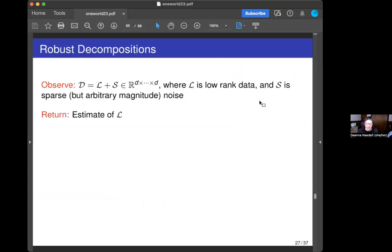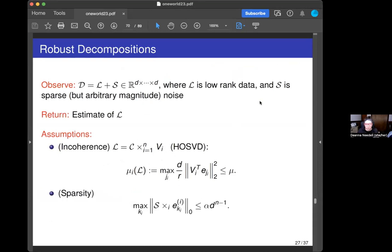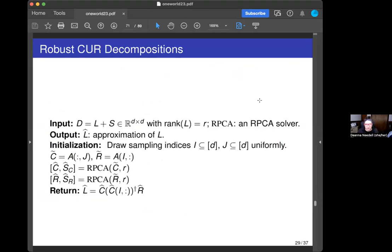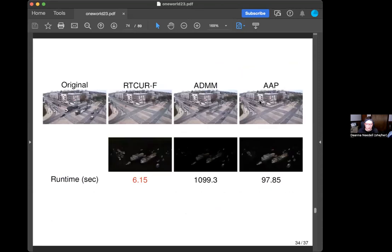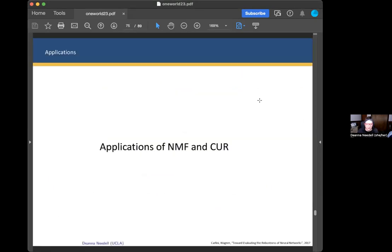We get that interpretability since it's built from the data. I'm going to skip over this, but there is also a robust version of this similar to robust PCA, and we have some results there. You can do things like separating foreground and background. In all of our examples, the runtime we see using CUR is drastically better than the others, just because of how simple it is.